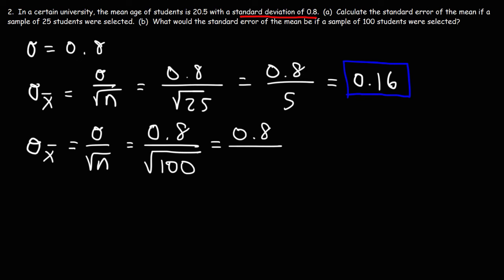The square root of 100 is 10 because 10 times 10 is 100. So we have 0.8 divided by 10, and that gives us a standard error of 0.08.